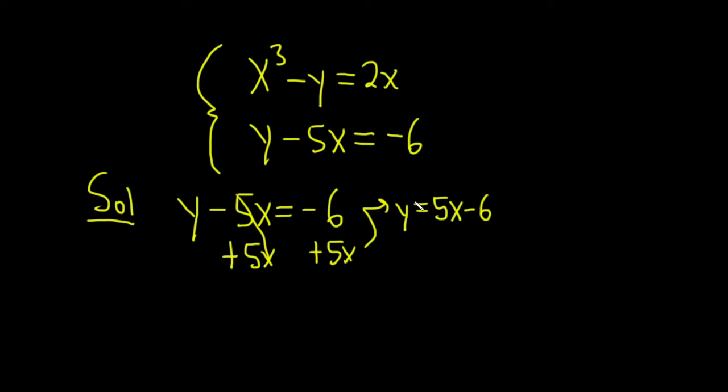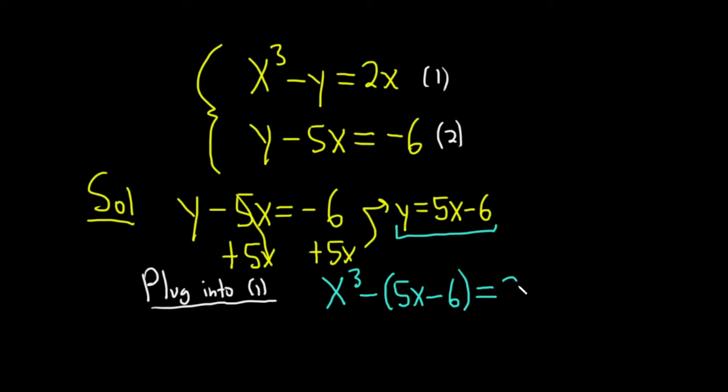Now we're going to plug this into the first equation. I'm going to give these names 1 and 2. Plug into 1. When we do that we get x cubed, then minus y. But y is all of this here, so it's two terms. It's really important to put it in parentheses. So 5x minus 6, and that's equal to 2x.